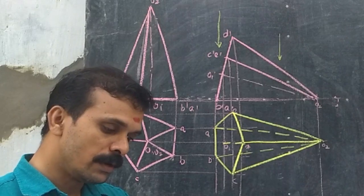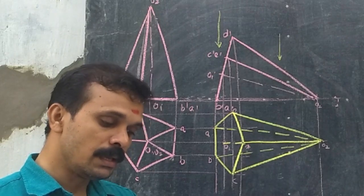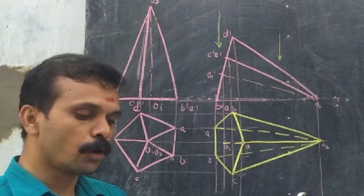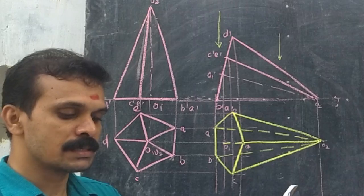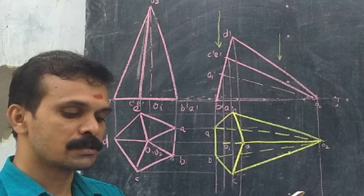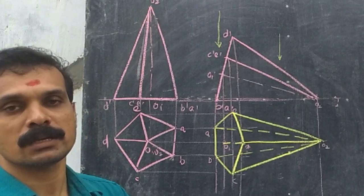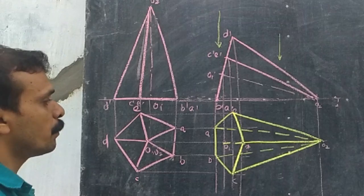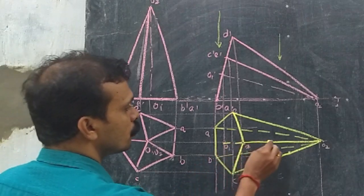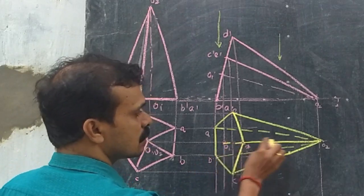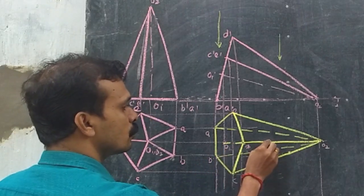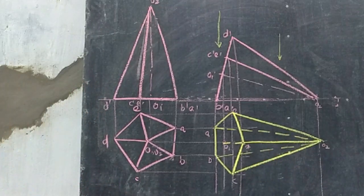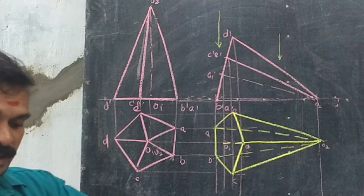The section plane is inclined 45 degrees with HP and passing through the midpoint of the top view of the axis, with the apex portion being removed. This is the top view, so the midpoint will be the midpoint of O2D.